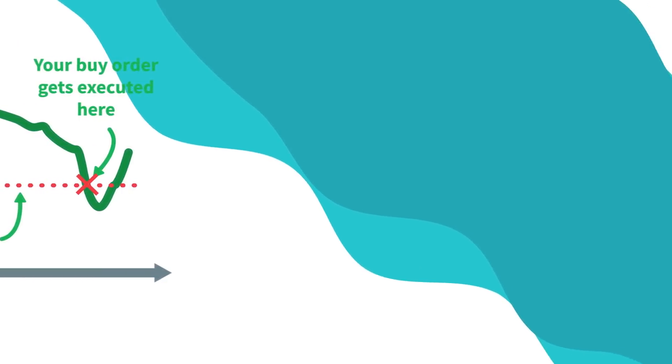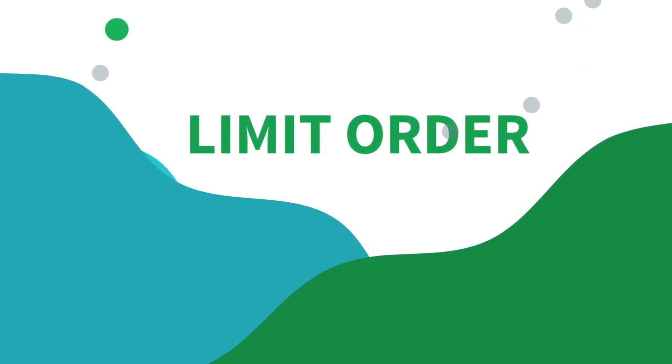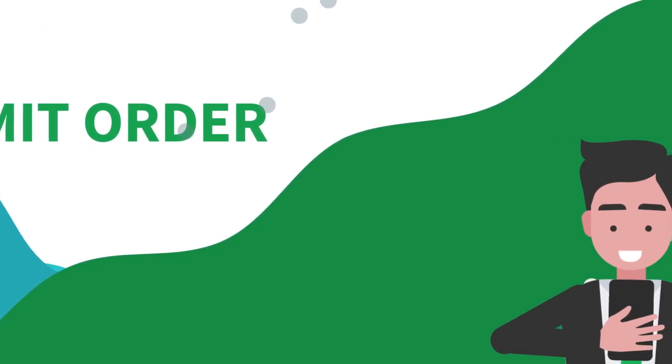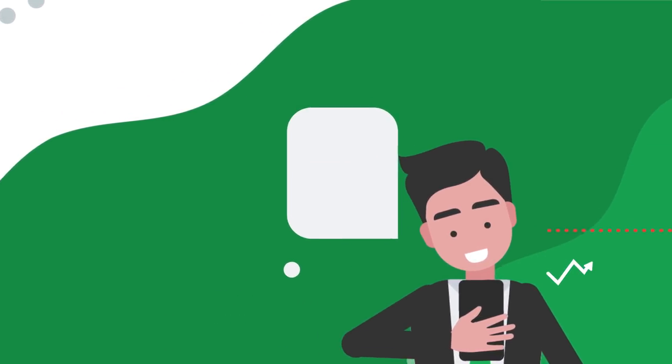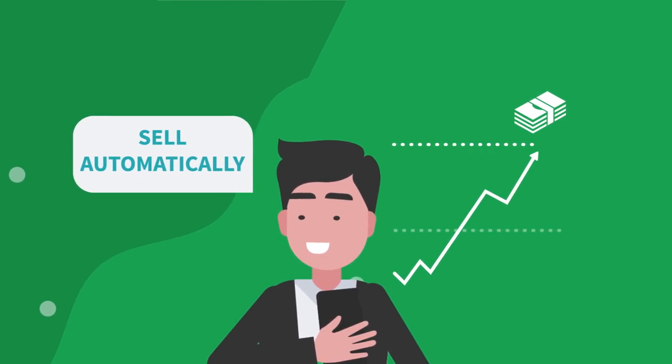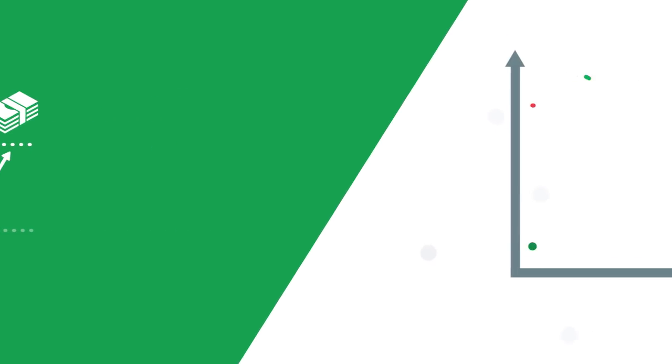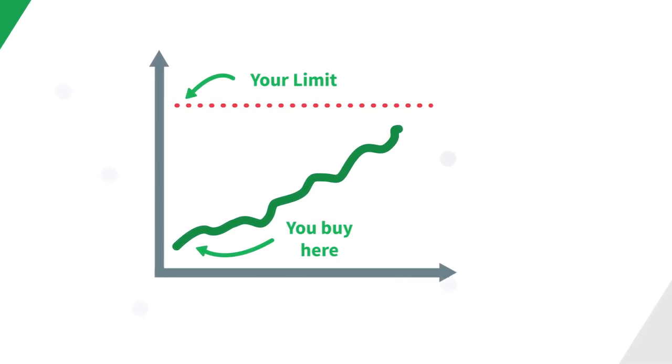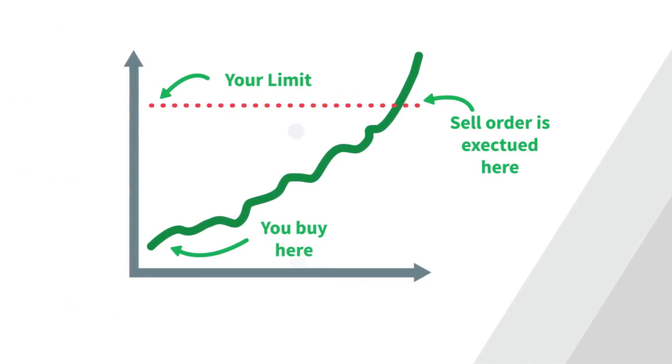The last type of order that we're going to explain in this video is the limit order. Sometimes it's also called a take profit order. Limit order is useful if you have bought a stock and automatically want to sell it as soon as you have made profit. Simply enter the price and we will sell your stocks as soon as the stock value rises above it.